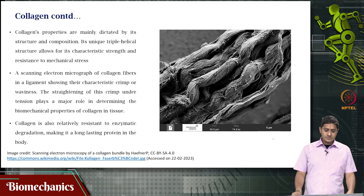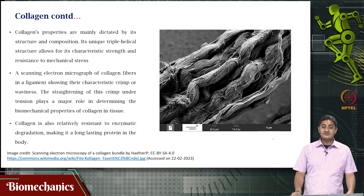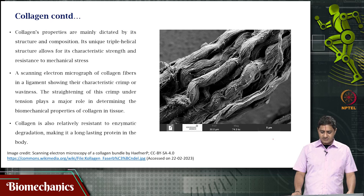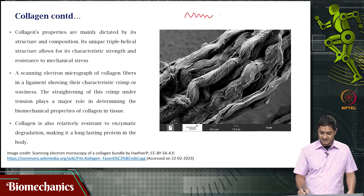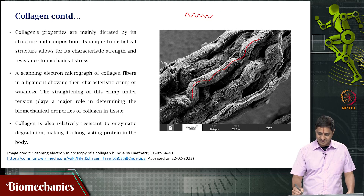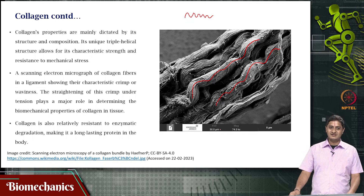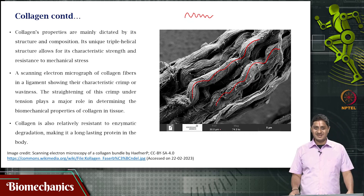Likewise for collagen, the properties are determined by structure and composition. It has a unique triple helical structure that gives it characteristic strength and resistance to mechanical stress. What is presented here is an electron micrograph of collagen fibers in a ligament, and you can see their characteristic waviness — crimp. This waviness or crimp characteristic is unique for collagen.